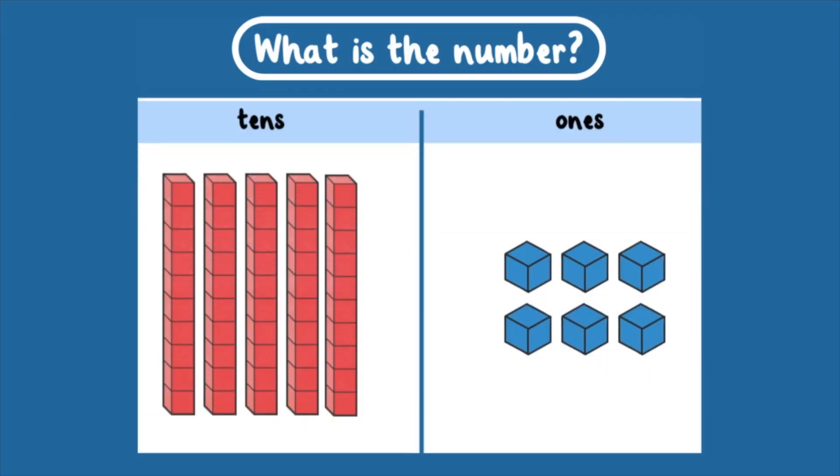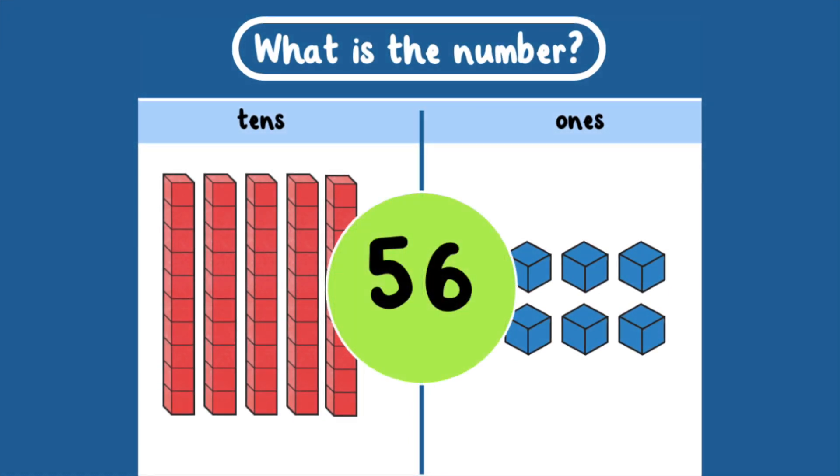What is the number? There are 5 tens and 6 ones. That equals 56.